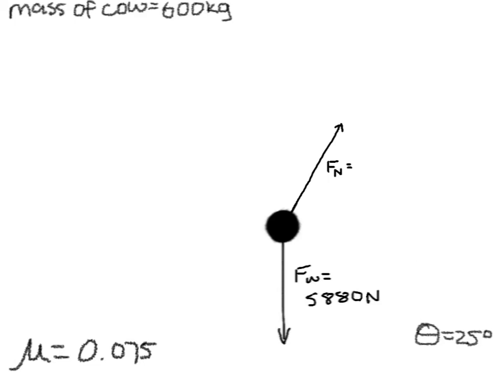Then there's the normal force, which is perpendicular to the slope, not, in this case, opposite the force of weight. Since the cow is neither levitating nor burrowing a hole into the ground, the normal force has to cancel with something, in this case, Fw cosine theta.